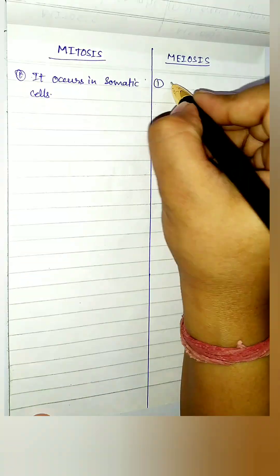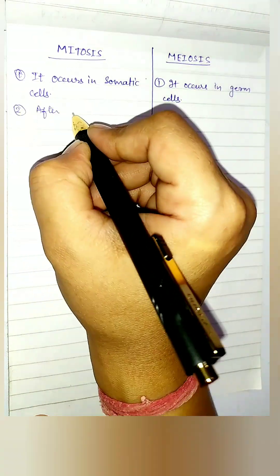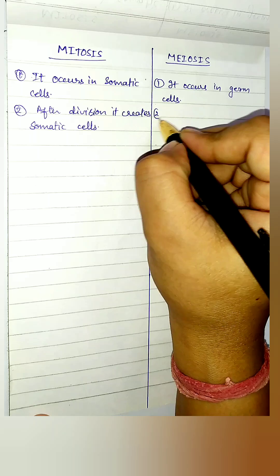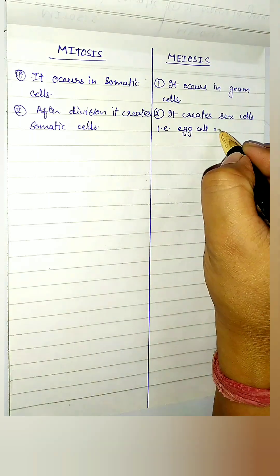Mitosis occurs in somatic cells. Meiosis occurs in germ cells. After division, mitosis creates somatic cells and meiosis creates sex cells, that is the egg cell and sperm cell.